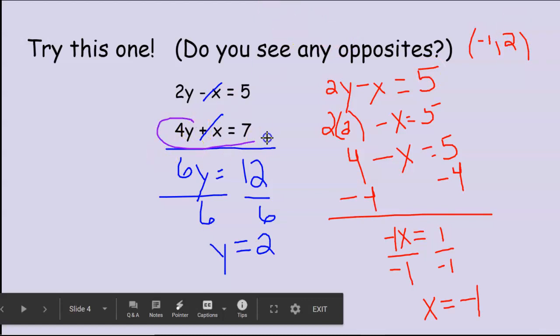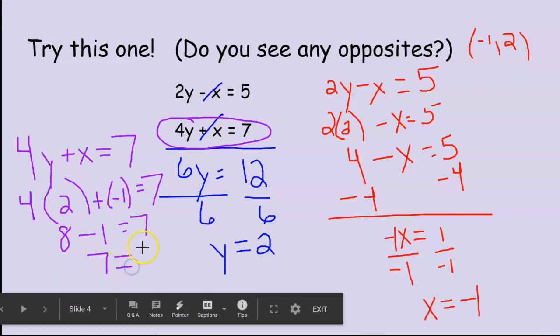I always check it in the other equation to make sure that that's true. So let's take this second equation. 4y plus x equals 7. And I'm going to substitute the values I know. 4 times our y value. Our y value is 2 plus negative 1, equals 7. Now I just simplify. 4 times 2 is 8. Plus a negative 1 really means minus 1. And I do know that 8 minus 1 is 7. And 7 equals 7. And that is our solution. Excellent work.